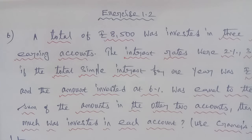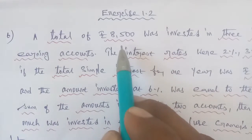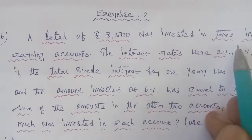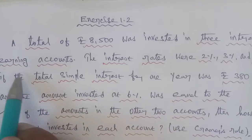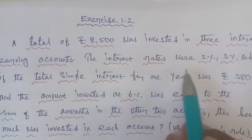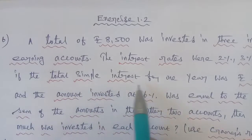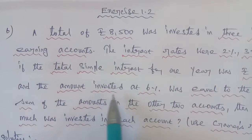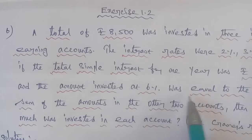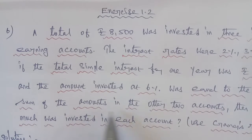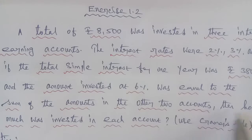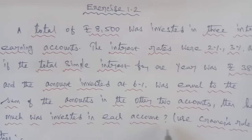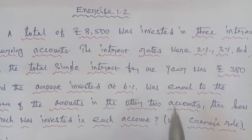Hi students. Business Maths Class 12, Chapter 1.2, Question number six. A total of rupees 8500 was invested in three interest-earning accounts. The interest rates were 2%, 3%, and 6%. If the total simple interest for one year was rupees 380, and the amount invested at 6% was equal to the sum of the amounts in the other two accounts, then how much was invested in each account? Use Cramer's rule.